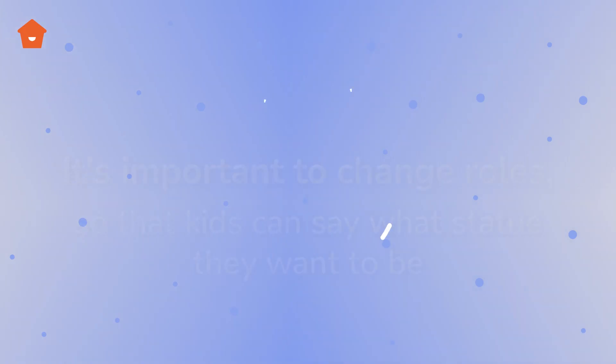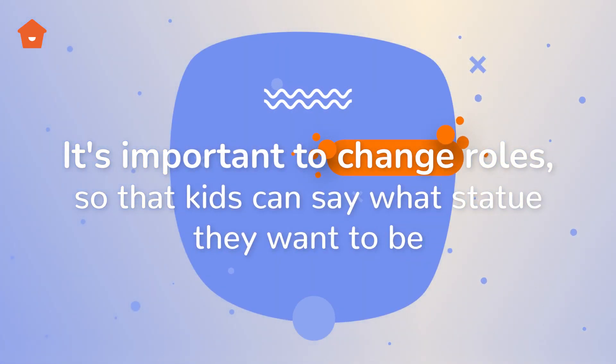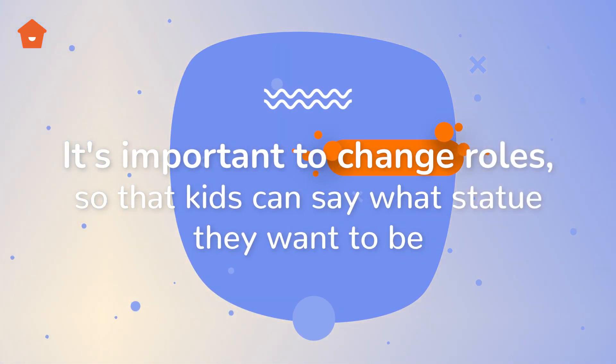You can dance standing up. You can do the statues dance where every statue is different — for example, a bug, a giraffe, a lion. It's important to change roles so that kids can say what statue they want to be. You can also dance with objects — you can cut two pieces of toilet paper and use them as ribbons while dancing.